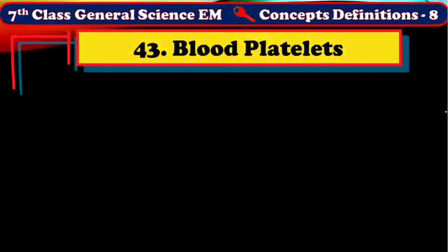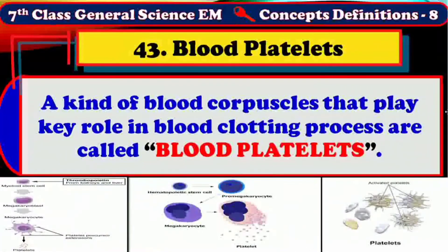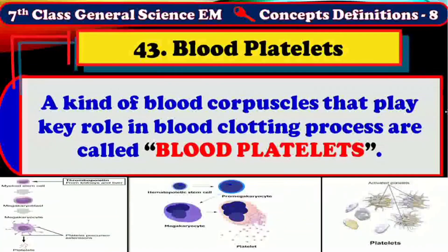A kind of blood corpuscle that plays a key role in the blood clotting process is called a blood platelet. Blood platelets are also called thrombocytes. Thrombocytes are the second highest in number among blood corpuscles and the smallest of all blood corpuscles. In healthy adult human beings, around 1.5 lakhs to 4 lakhs thrombocytes are present in 1 cubic centimeter of blood. Like WBC, they are also shapeless and colorless.